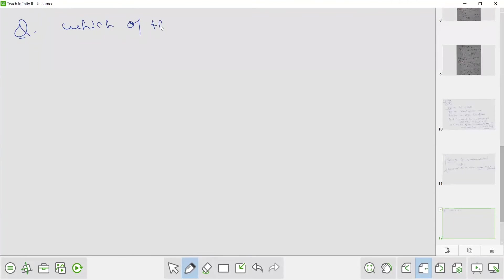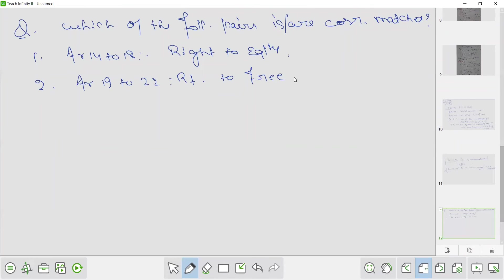Which of the following pairs are correctly matched? Now let's take the mic off. Article 14-18, Right to Equality. Article 19-22, Right to Freedom. Statement 3, Article 23-24, Right against Exploitation.